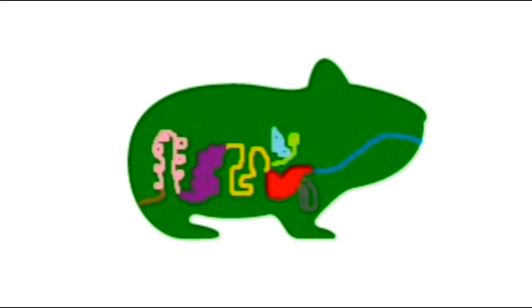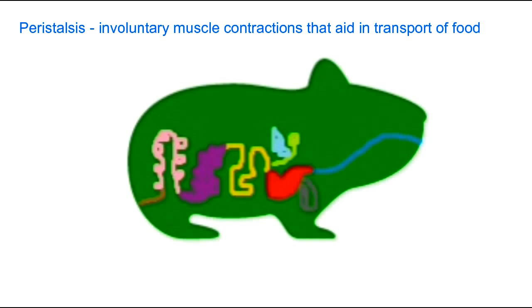Starting at the head of the guinea pig you can see a blue tube that I've drawn. This represents the mouth or also known as the oral cavity and the esophagus. In the mouth food is chewed and mixed with saliva. It is then passed down into the esophagus by contractions of the muscle wall called peristalsis.